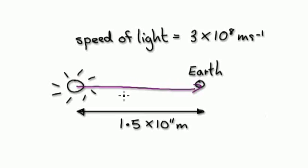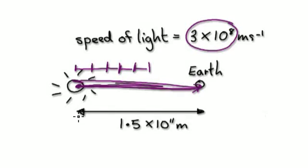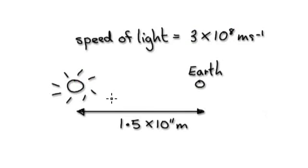Think about it this way. If in one second light travels a certain distance, then in two seconds it's traveled twice that, three seconds three times, and so on. So if you want to know how long it takes to cover the total distance, you take the whole distance and divide it by how far light travels in one second. That gives you the time. Find out the time it takes for light to reach Earth from the Sun.